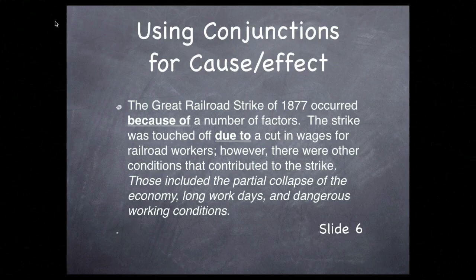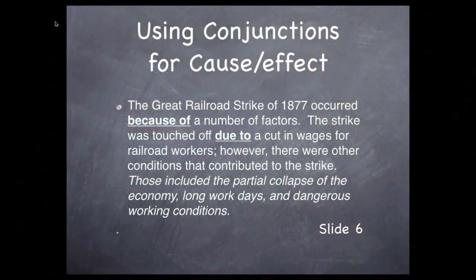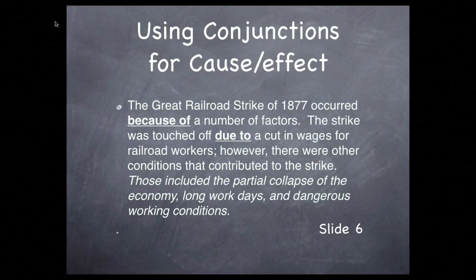However, there were other conditions that contributed to the strike. Those included the partial collapse of the economy, long work days, and dangerous working conditions. Notice we didn't list all the other effects — we could do that depending on how detailed we want it to be. We could add that strikes spread across the country, transportation was disrupted, and there was violence and destruction. No cause-effect conjunctions are needed doing it this way, since we already established a cause-effect relationship in the earlier sentences.